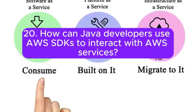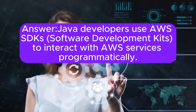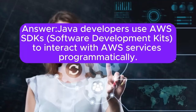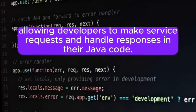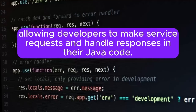Question 20: How can Java developers use AWS SDKs to interact with AWS services? Java developers use AWS SDKs software development kits to interact with AWS services programmatically. The SDKs provide APIs and libraries that simplify the integration of Java applications with AWS services, allowing developers to make service requests and handle responses in their Java code.